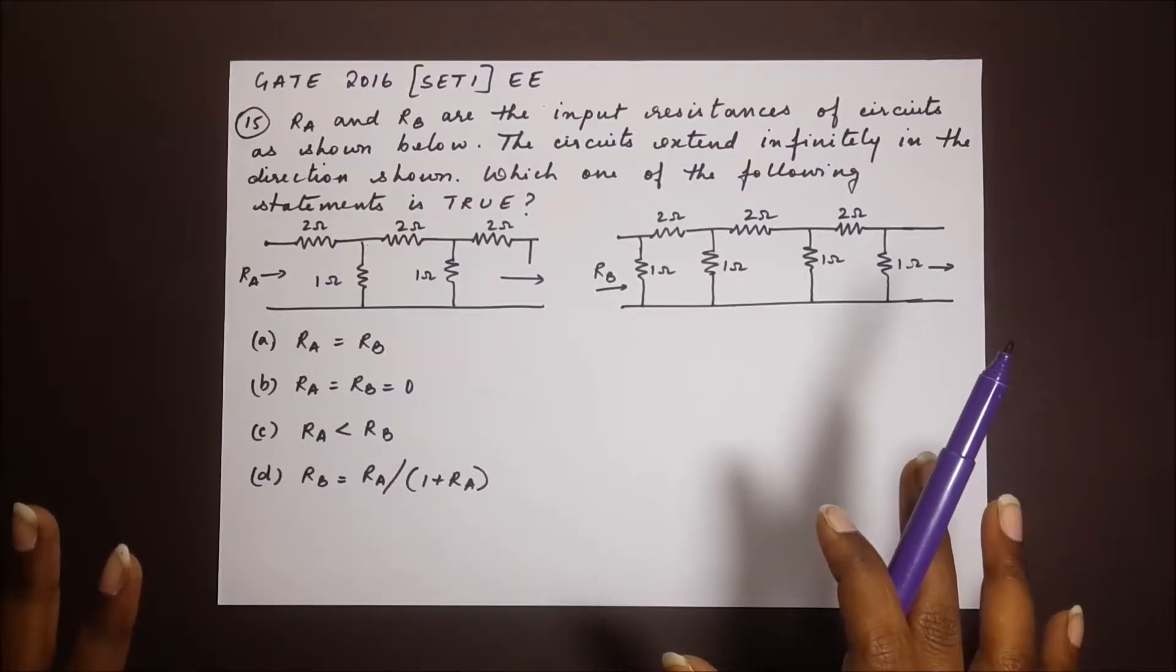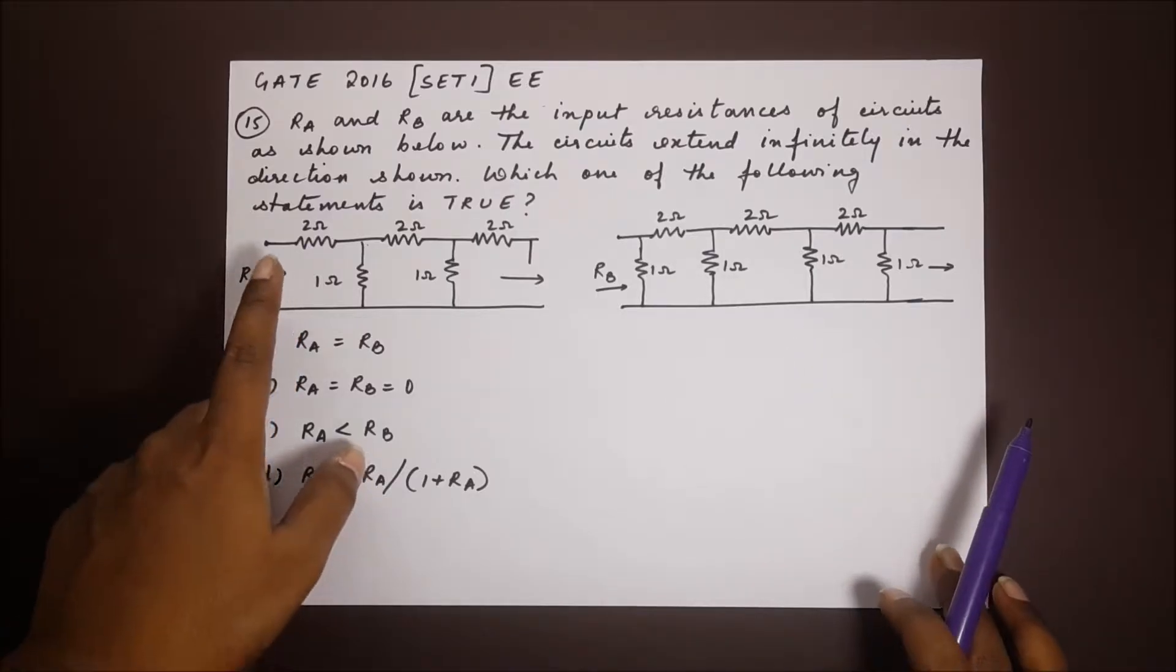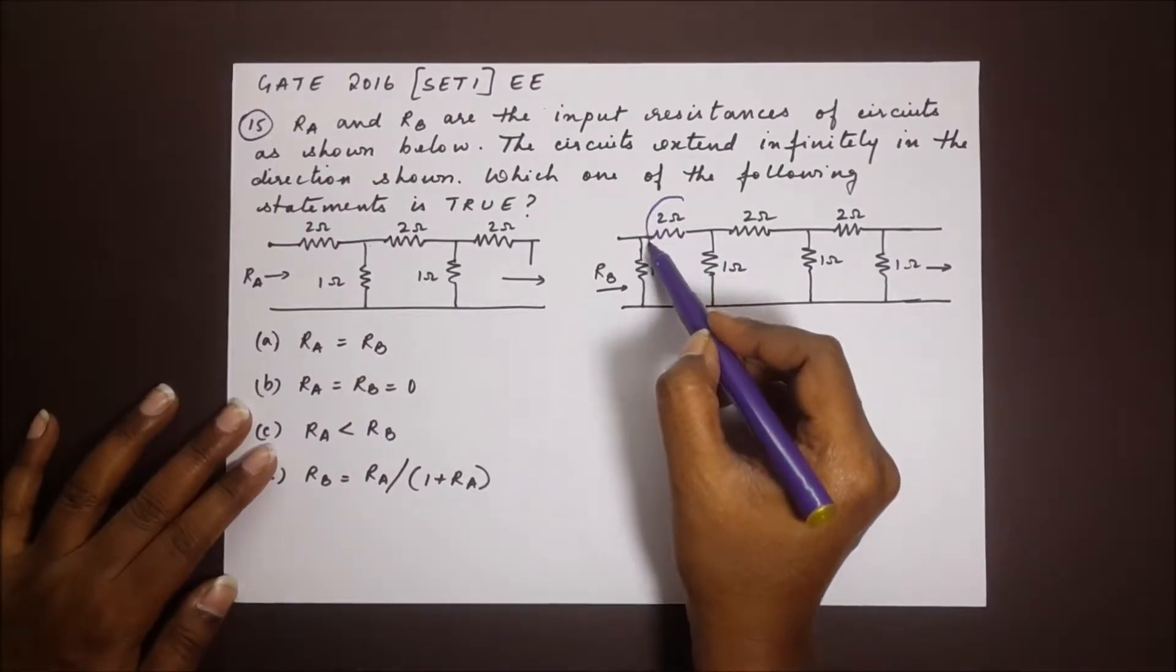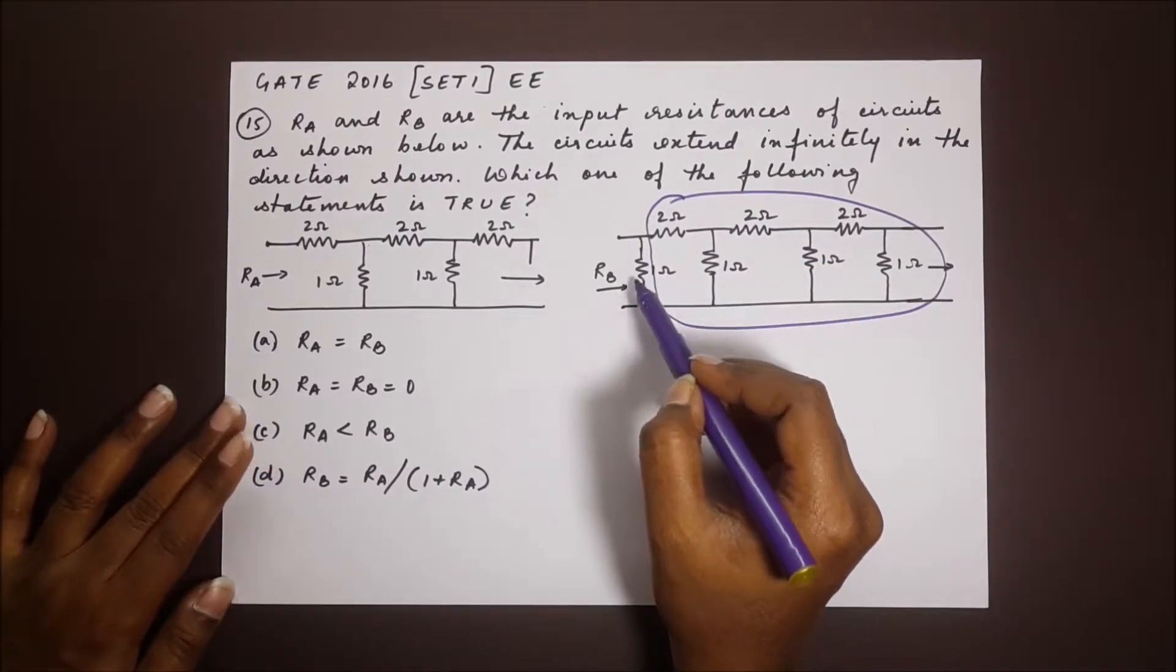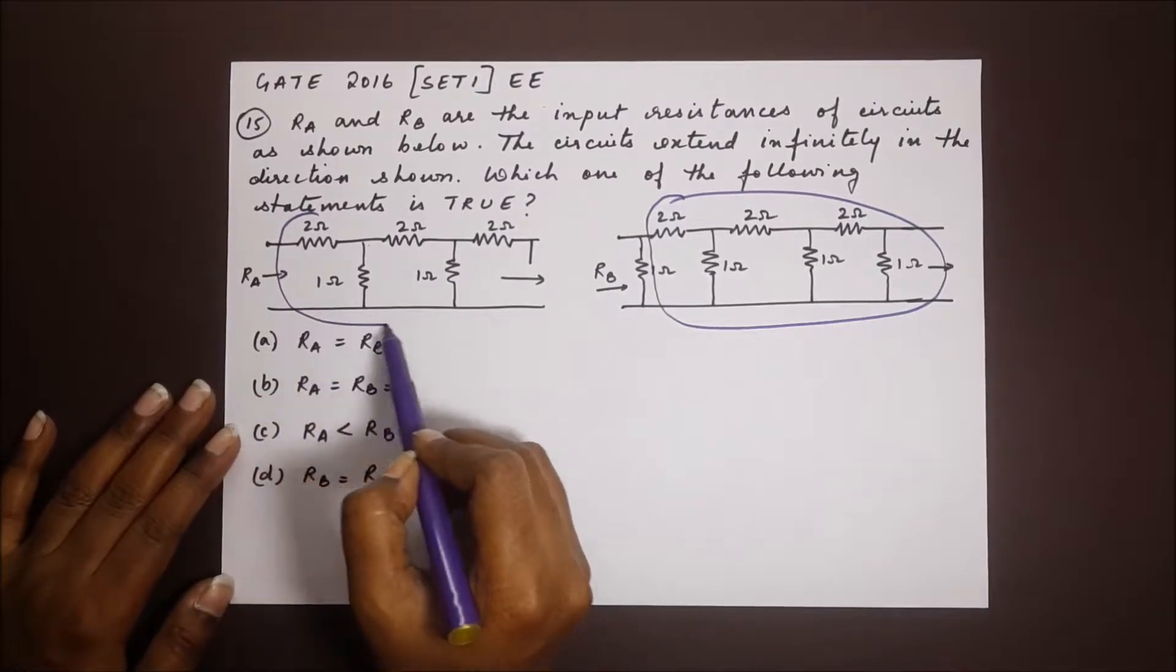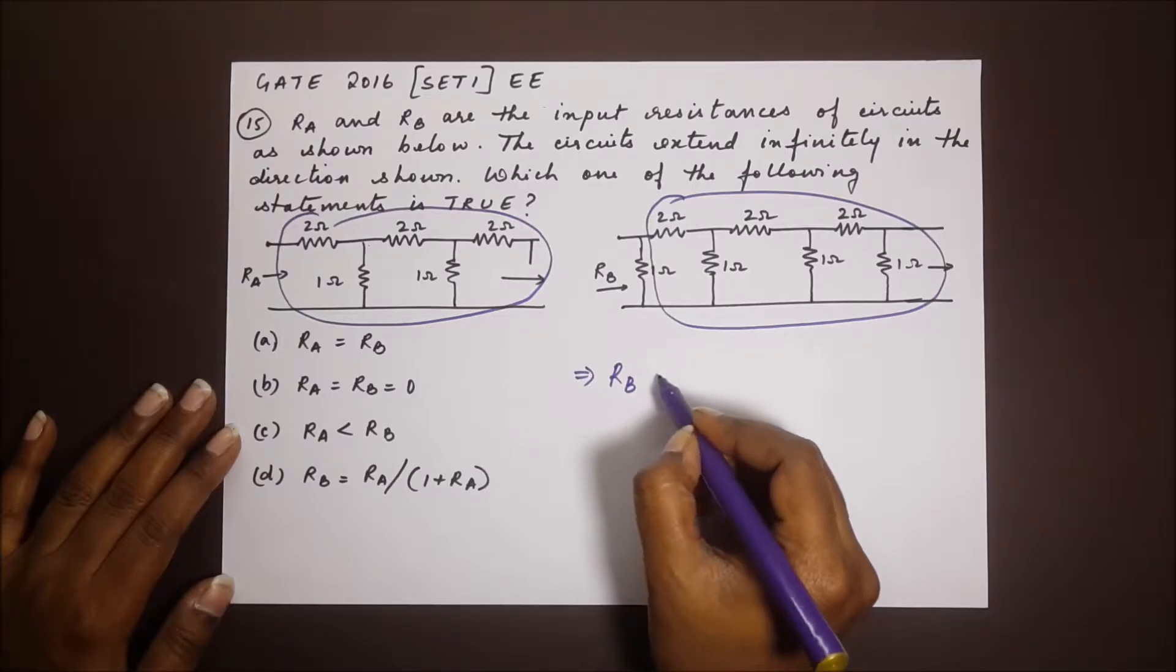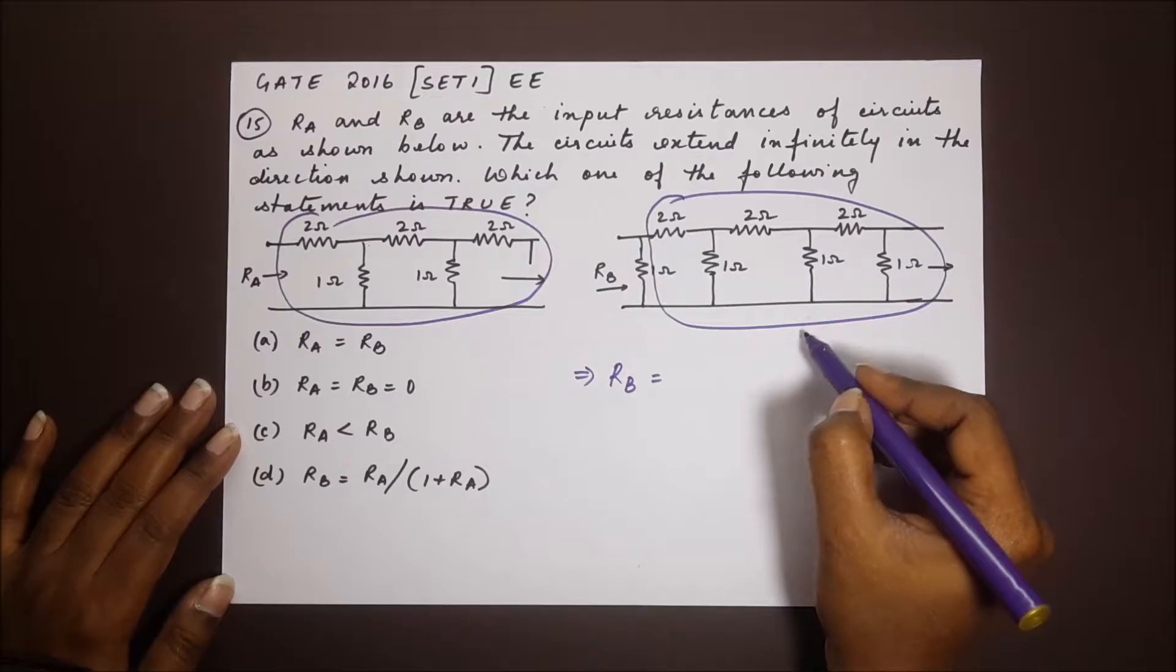Now we have to look at both of these circuits and try to analyze. You will notice that this portion is exactly the same with this here. Everything except for this one ohm resistor in the beginning is the same with the first circuit over here. So this implies that RB is equal to the entire circuit RA.